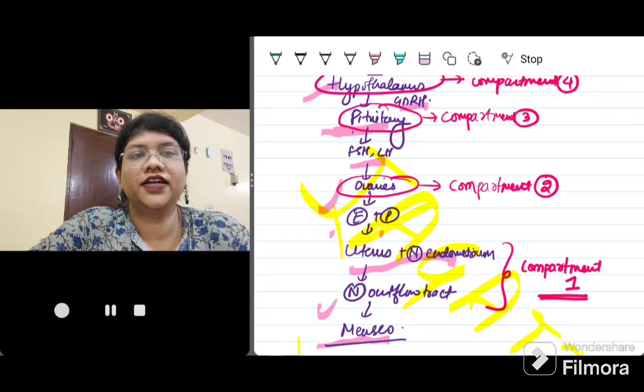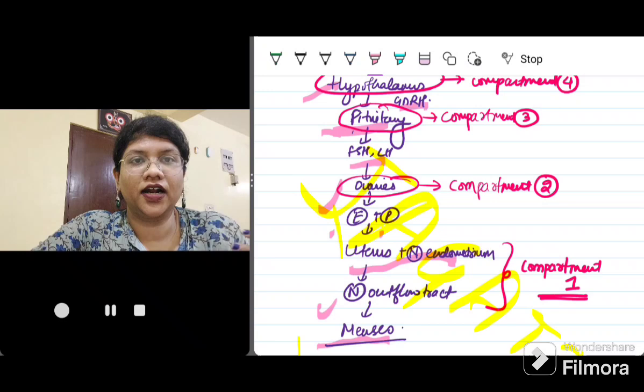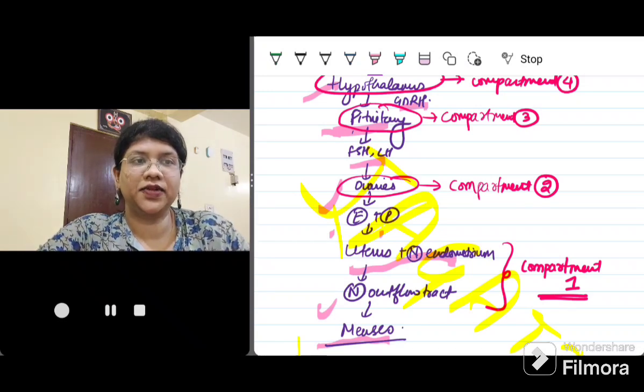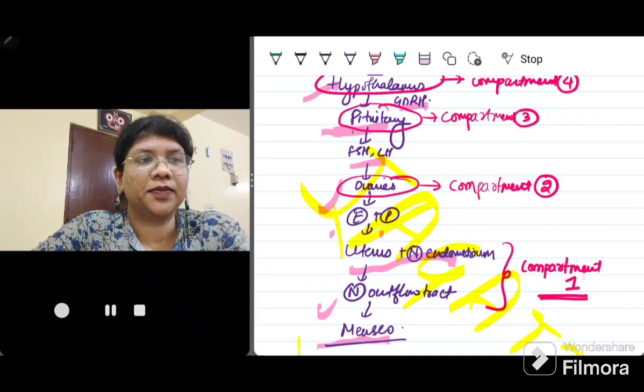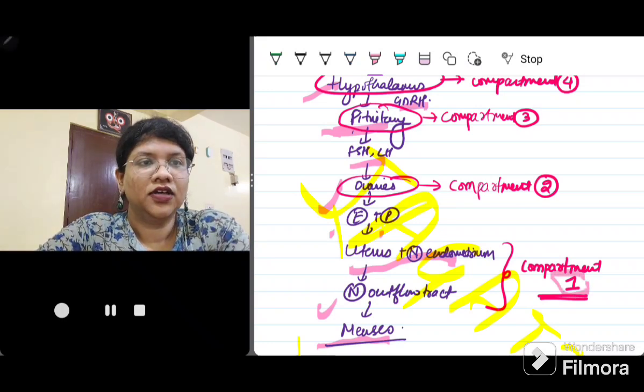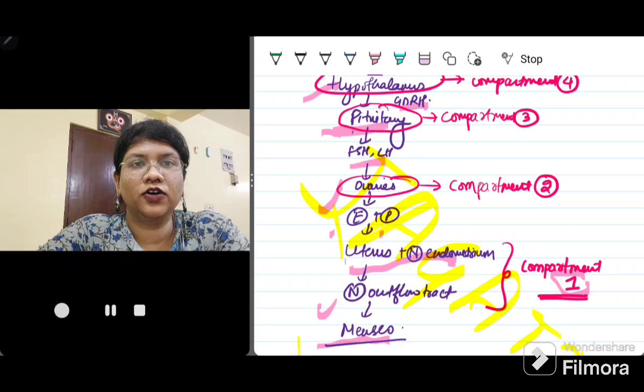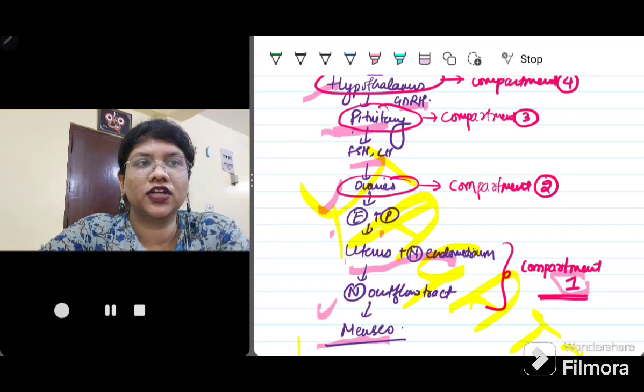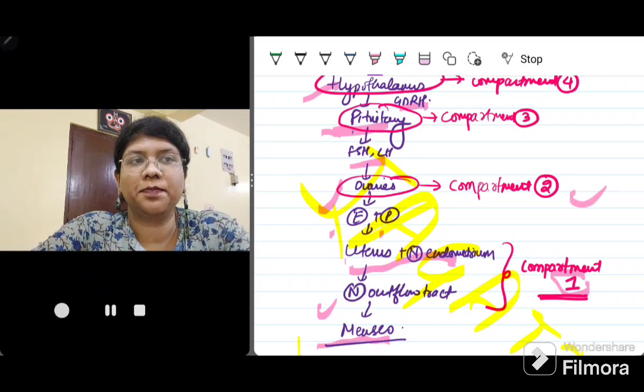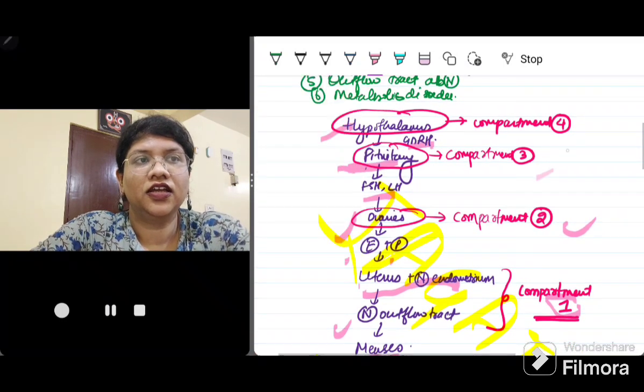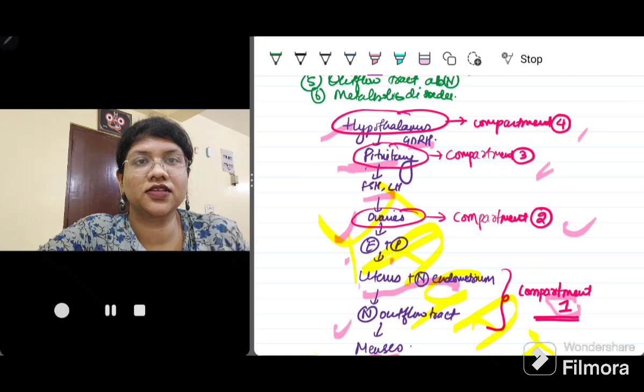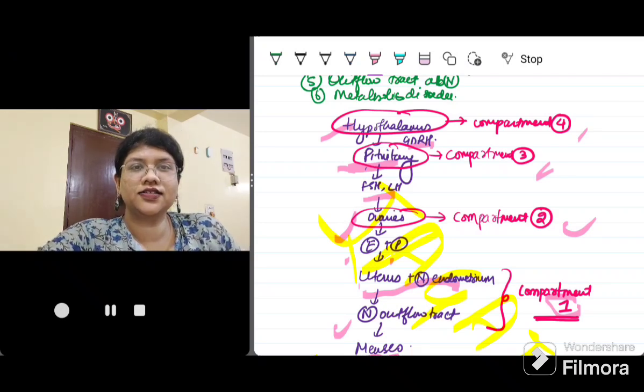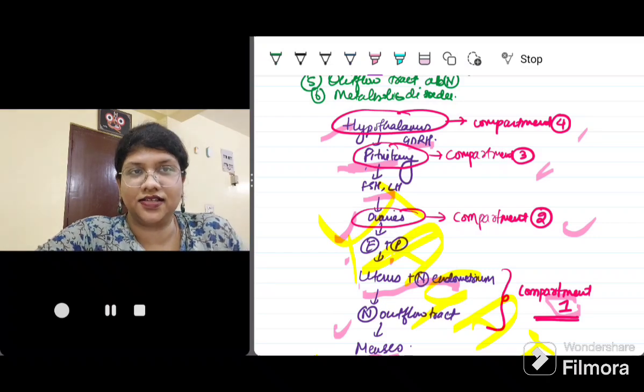Now, this has been divided into compartments. For understanding the reason for amenorrhea, the compartments have been classified as compartment 1, so we go from down to up. Uterus and any outflow tract abnormality is compartment 1. Ovaries constitute compartment 2. Pituitary is compartment 3, and hypothalamus problem is compartment 4. This is very important to remember so that you can understand the causes of amenorrhea easily.